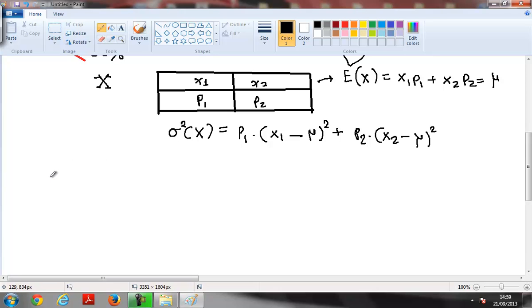In the first case, I had 0.5 for minus 10 and 0.5 for 30 percent. Then, sigma squared of x, so the variance is p1, that's 0.5, x1, x1 is the number, the number is the rate of return, that's minus 10, minus mu, mu is the expected rate that I found before and it was 10.